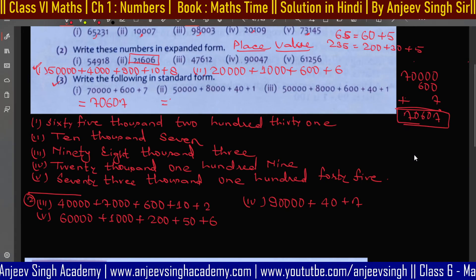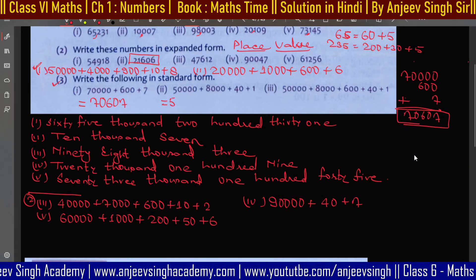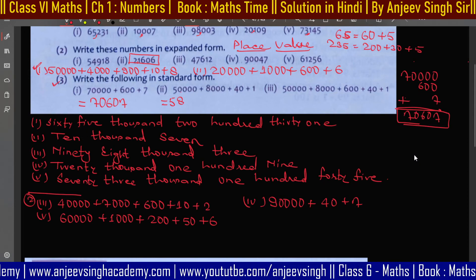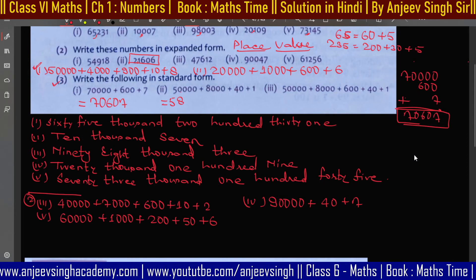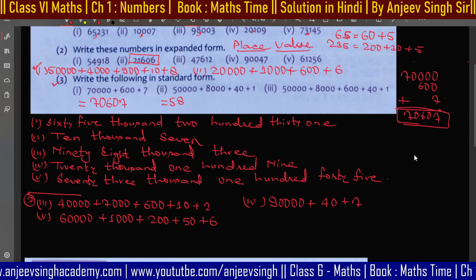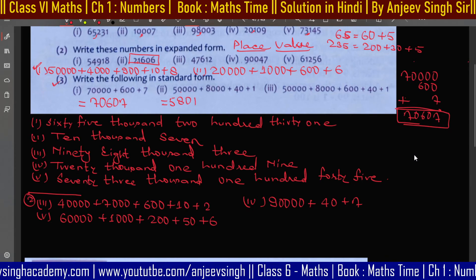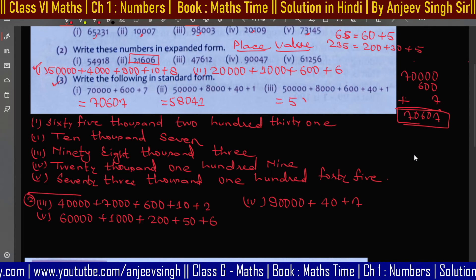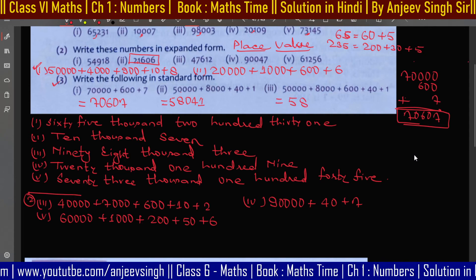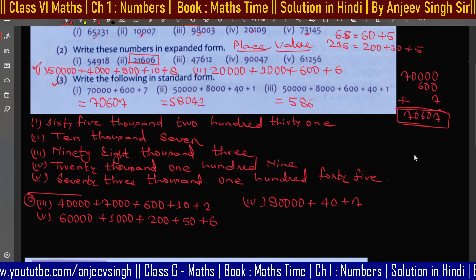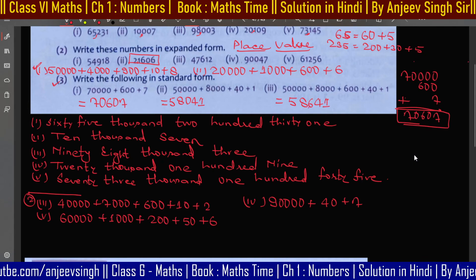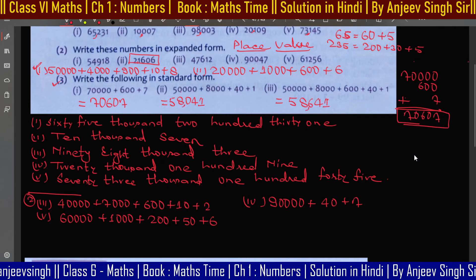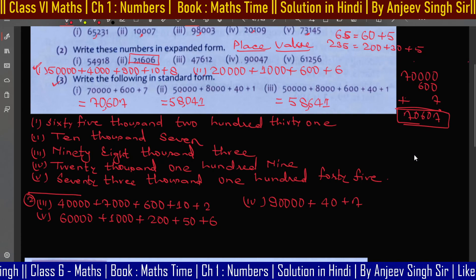For the next example: you have 5, then 4 digits, then 8, then 3 digits with a 0, then 4, then 4, giving 5, 8, 6, 4, 1. If you need to insert the comma to separate, do so accordingly. This way you get the expanded form and then the standard form: 58,641.